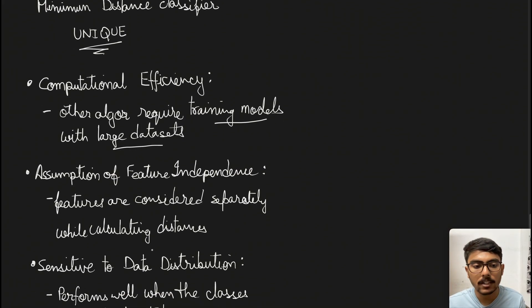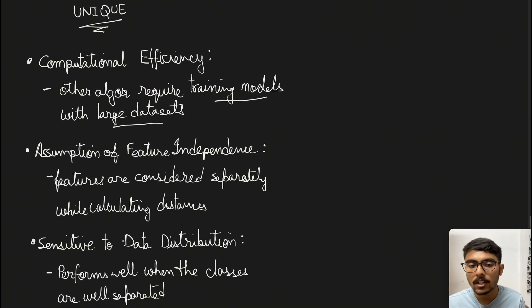Third is sensitivity to data distribution. When classes are well distributed in different proper boundaries, our minimum distance classifier performs very well. It'll just draw the decision boundary in the middle of these and classify if the data object lies here or here.